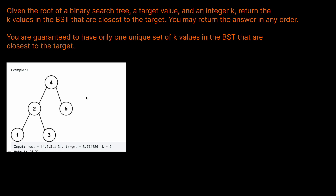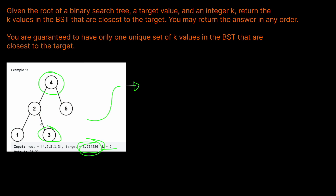Let's look at an example with a simple binary search tree, given a target of 3.714286 — why they couldn't just give us a regular target instead of this long decimal number, I don't know — and k equals two. So we want to find the two elements closest to 3.7. Upon inspection, those are going to be three and four, because the distances between this number and three and four are the two smallest distances.